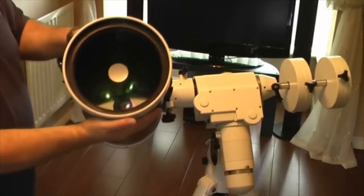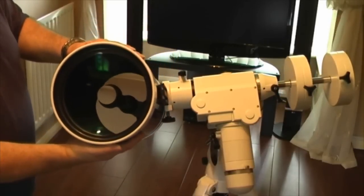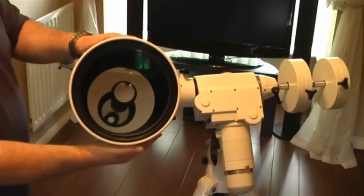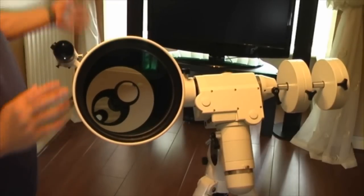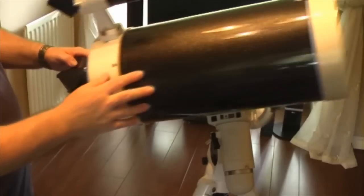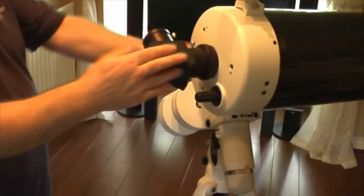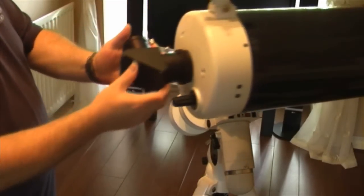Now if we look down the tube you can see that there's a primary in there. Now that primary has a hole through the middle of it. So when we look through the scope we're actually looking through a hole in the primary mirror.